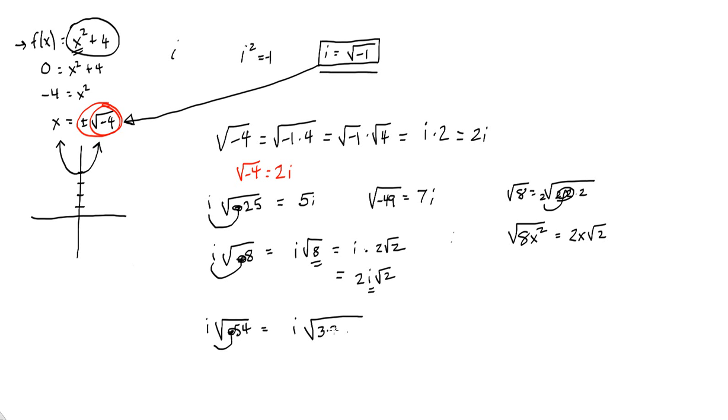54 is 9, 3 times 3, times 6, isn't it? 9 times 6 is 54. Pull out the 3. Your answer is 3i radical 6. Okay? So just in summary,